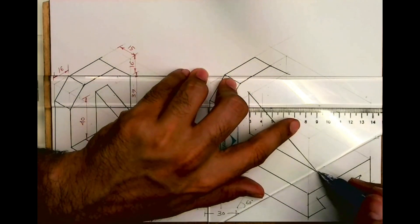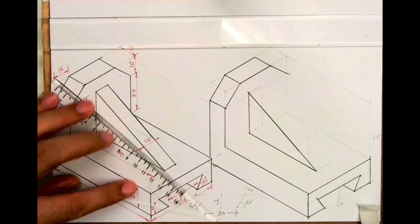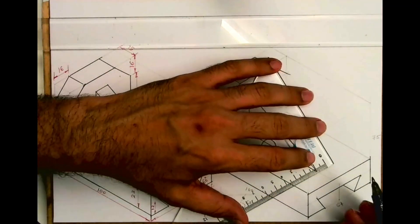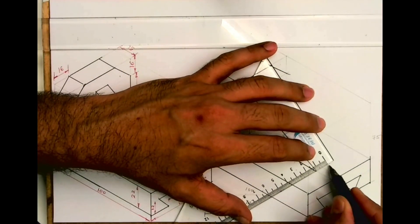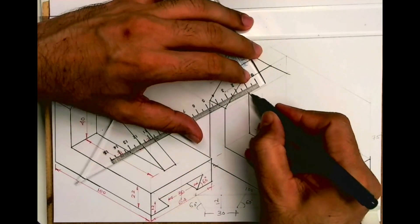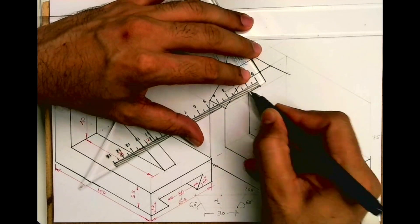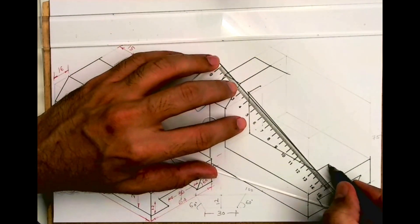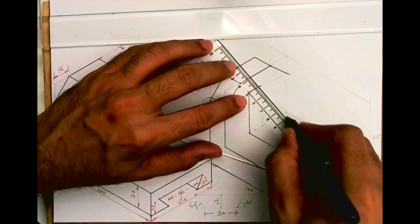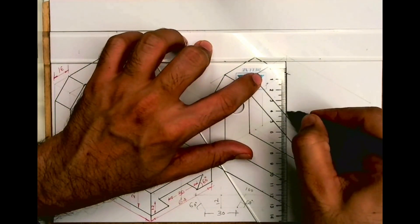Then you go behind how much? You have to go behind 10. Sorry, you go behind by 12. And you join that slope and you join that slope. Then draw vertical line from here.